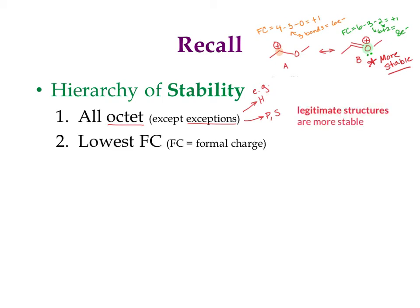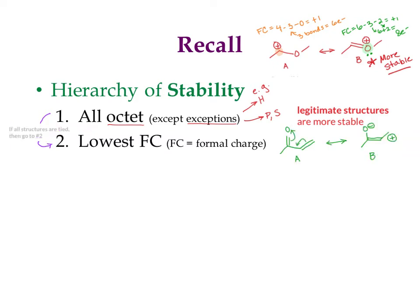If you have a tie and all your resonance structures are legitimate — or none of them are — then the next thing to look at is the lowest formal charge. If one resonance form has no formal charges on any atoms and another has a positive and a negative, the all-zeros form is more stable. Similarly, a form with a +1 formal charge is better than one with a +2. Smaller numbers are better, and zero is the best formal charge.